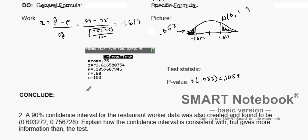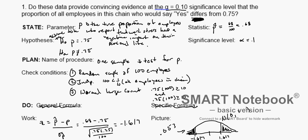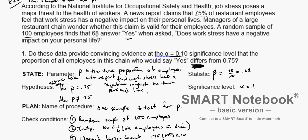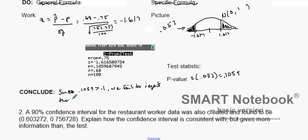Now for our conclusion: since our P-value of 0.1059 is greater than our alpha value of 0.1, we fail to reject the null hypothesis. We do not have convincing evidence — we have some evidence, but not convincing evidence.